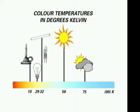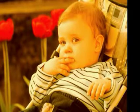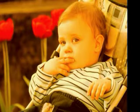If your camera is set to shoot in daylight but you're shooting in tungsten light, your image will look overly yellow, sometimes red.